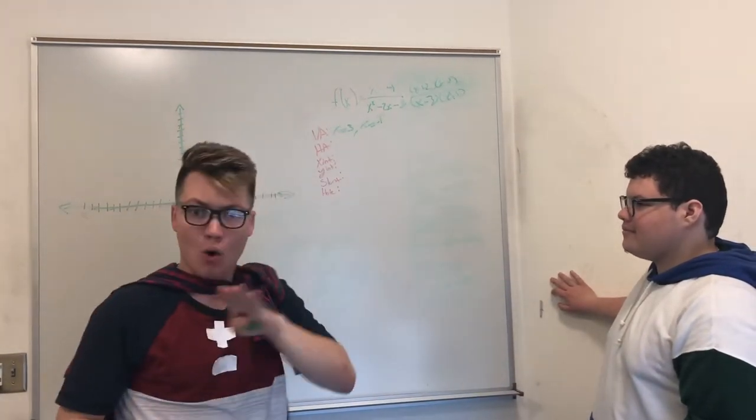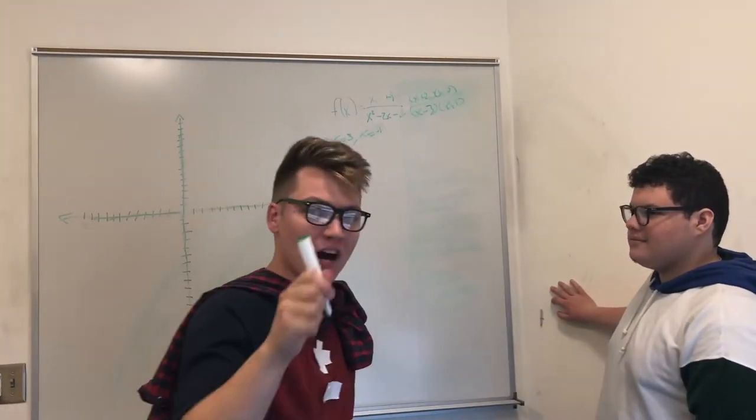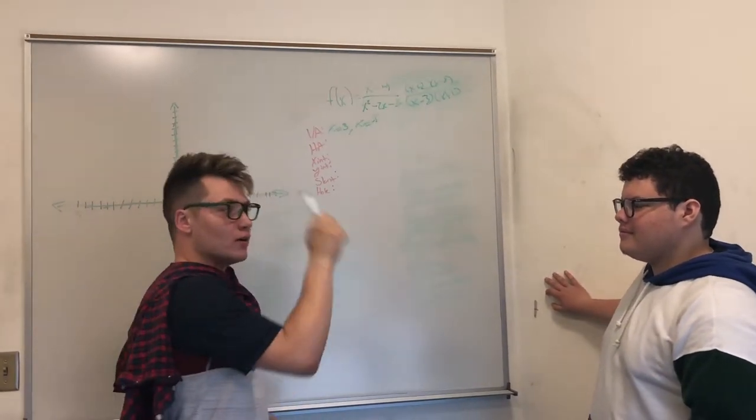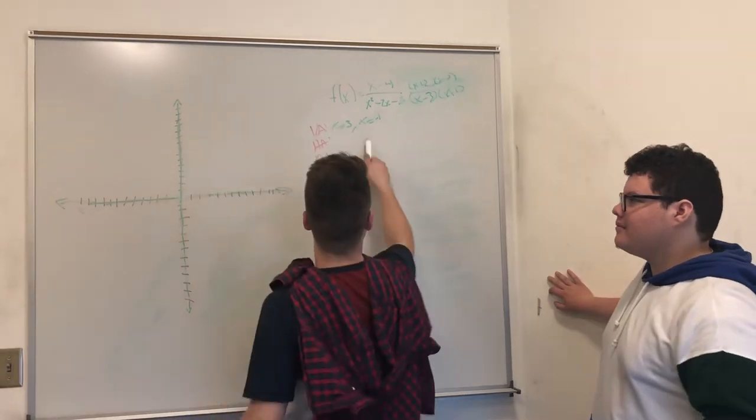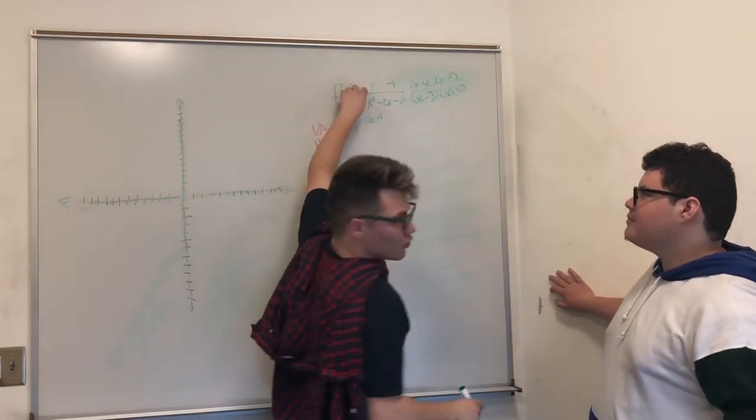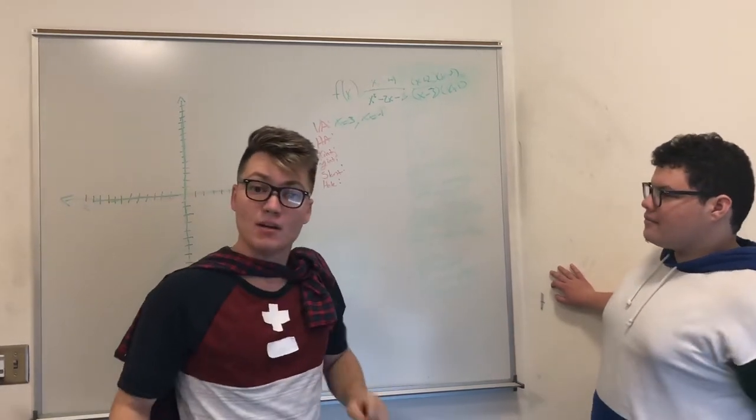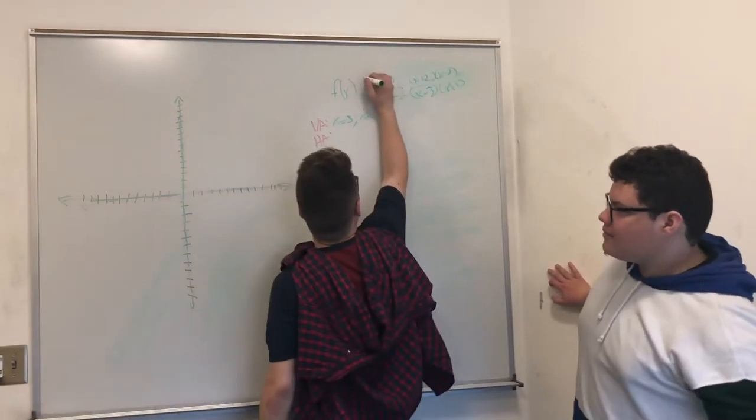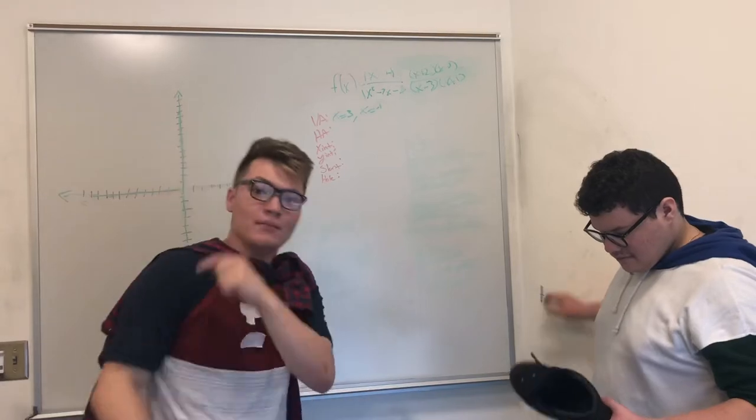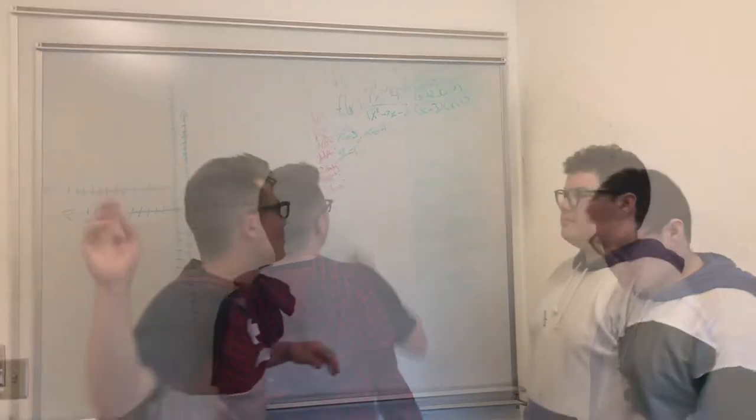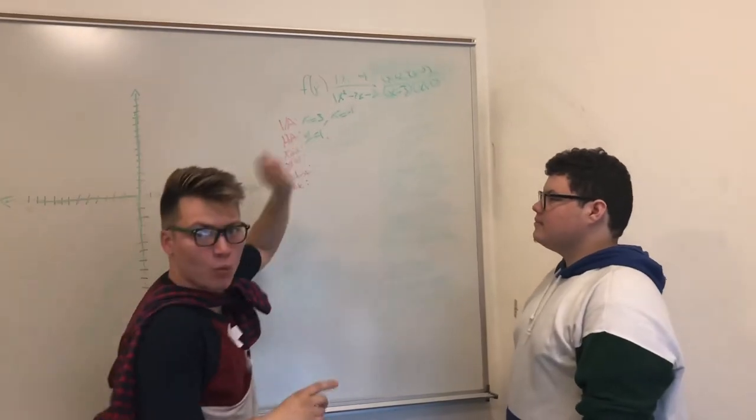So, next up we have to find the horizontal asymptote. Now, this is a y value where the graph cannot touch, cannot equal that. Although, you'll see in a bit, it has its little exceptions. So, to find that we look at the degrees of the numerator and of the denominator. In this case, they are the same. So, when that's the case, we take the coefficient of both two and we divide them by each other and we get 1. So, y equals 1. Alright. So, the horizontal asymptote is at y equals 1.